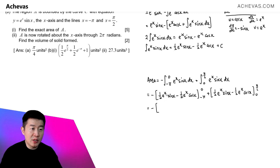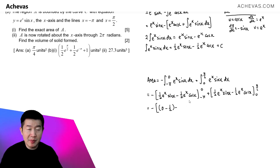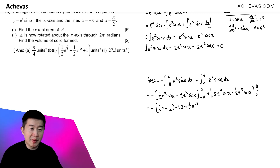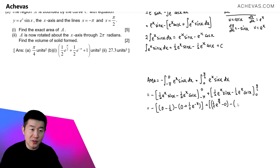Substituting x = 0: e⁰ = 1, sin(0) = 0, so the first term is 0; then -½(1)(1) = -½. So the upper limit gives 0 - ½ = -½. Substituting x = -π: sin(-π) = 0, so the first term is 0; cos(-π) = -1, giving -½ · e^(-π) · (-1) = +½e^(-π). For 0 to π/2: substituting π/2 gives ½e^(π/2) · 1 = ½e^(π/2), and cos(π/2) = 0, so that term vanishes. Substituting 0 again gives 0 - ½.